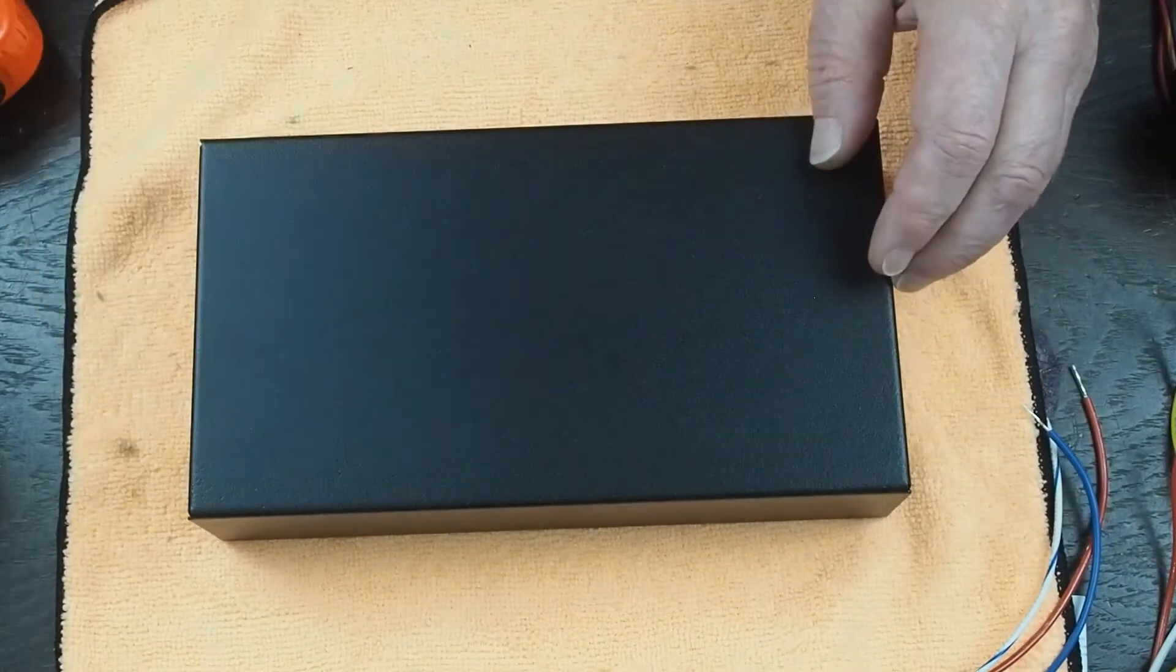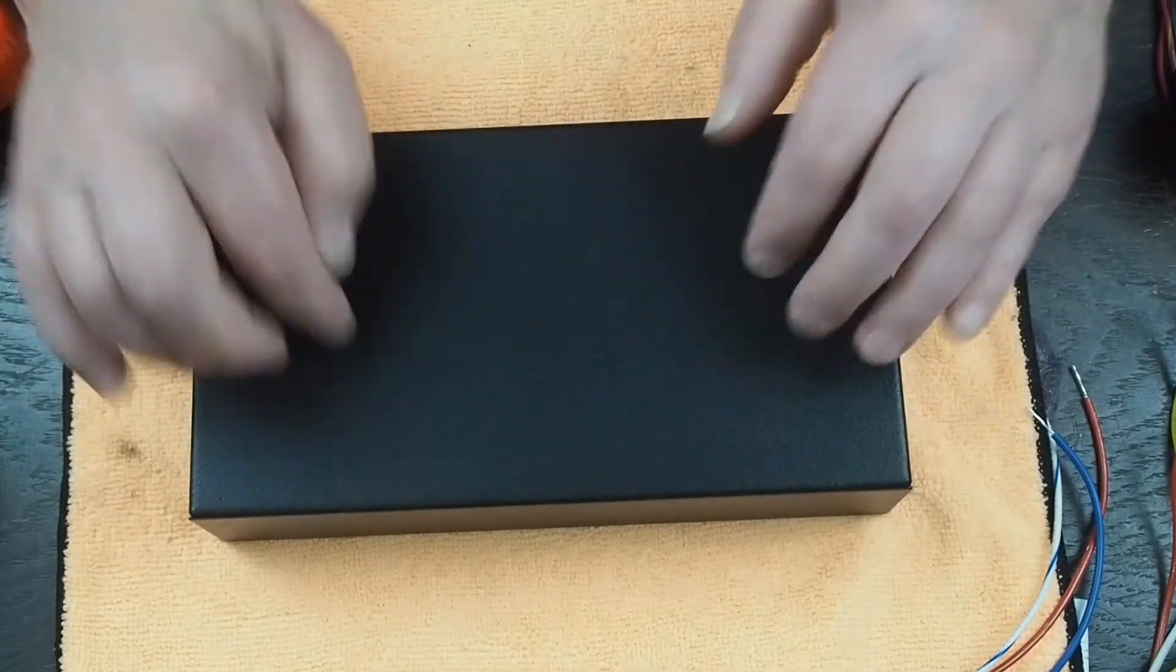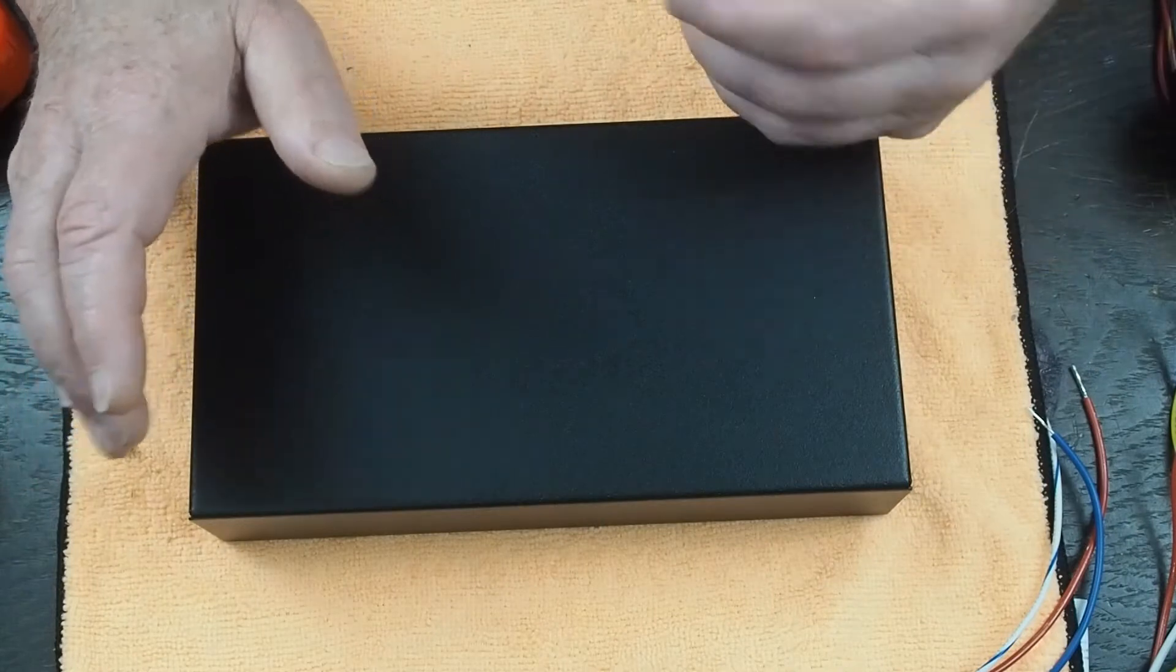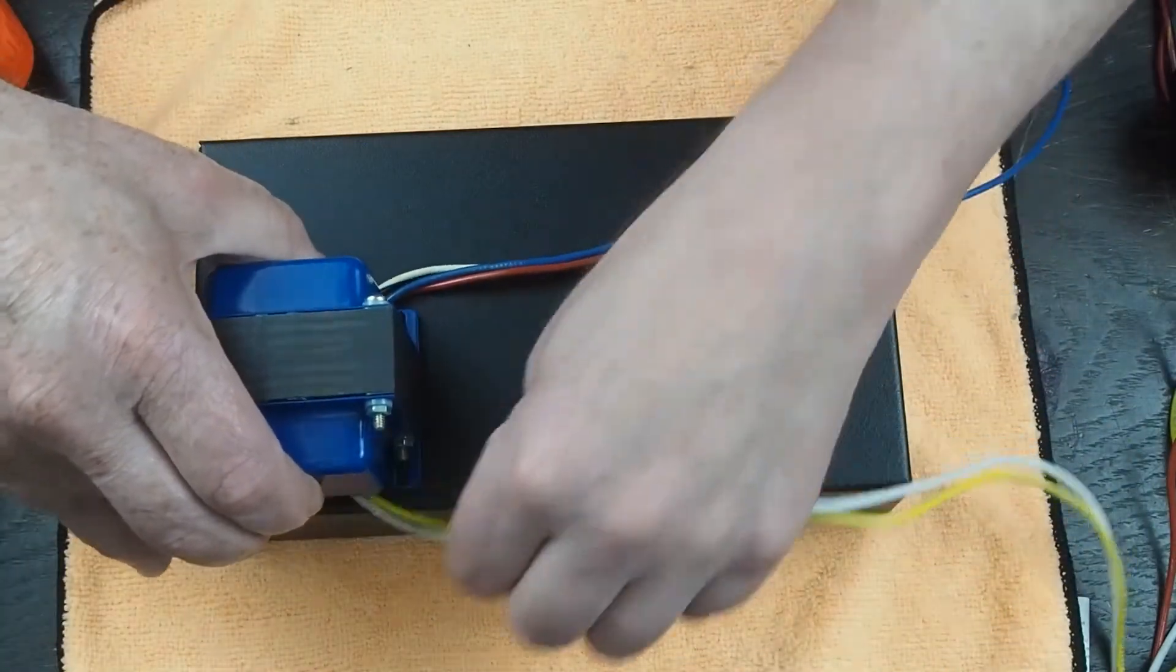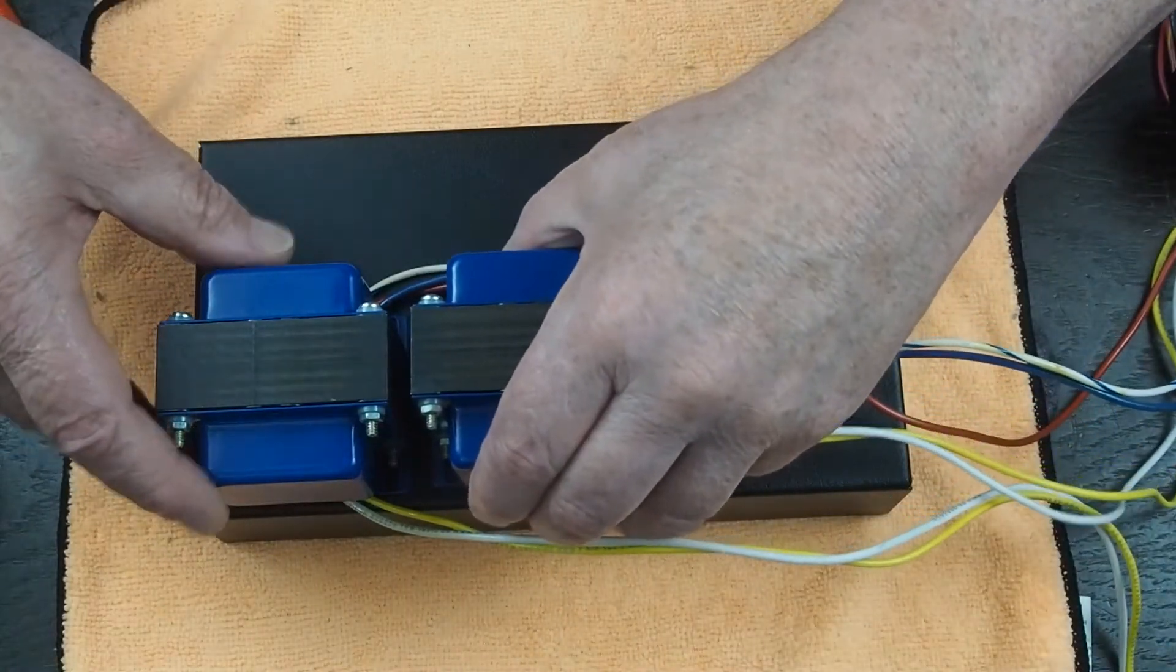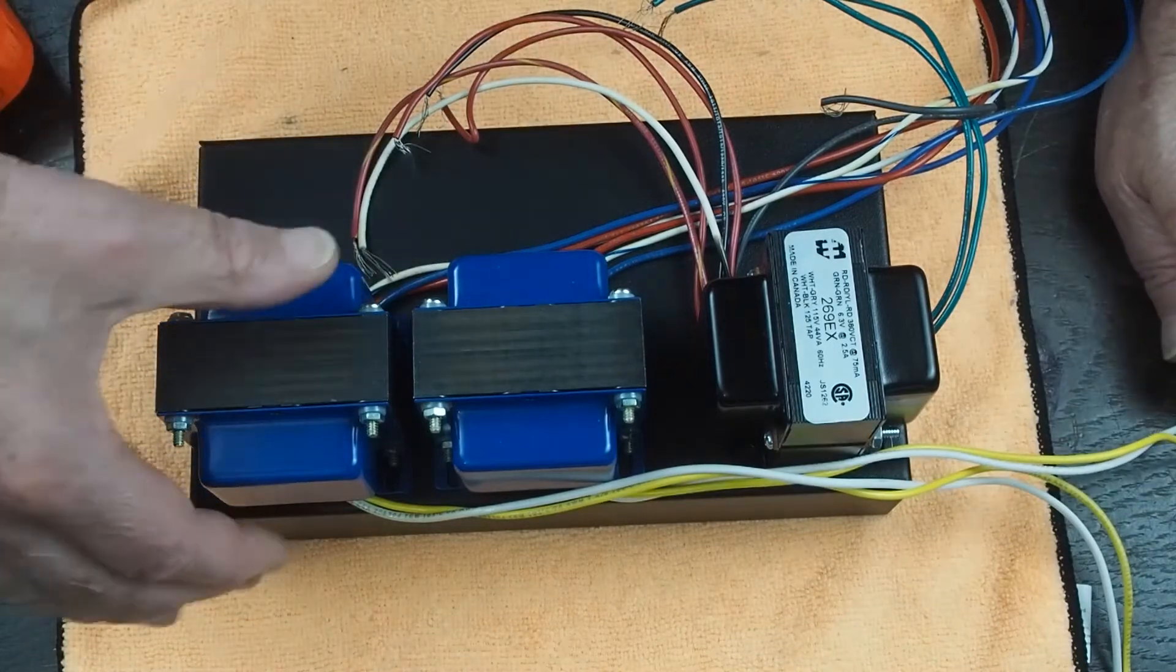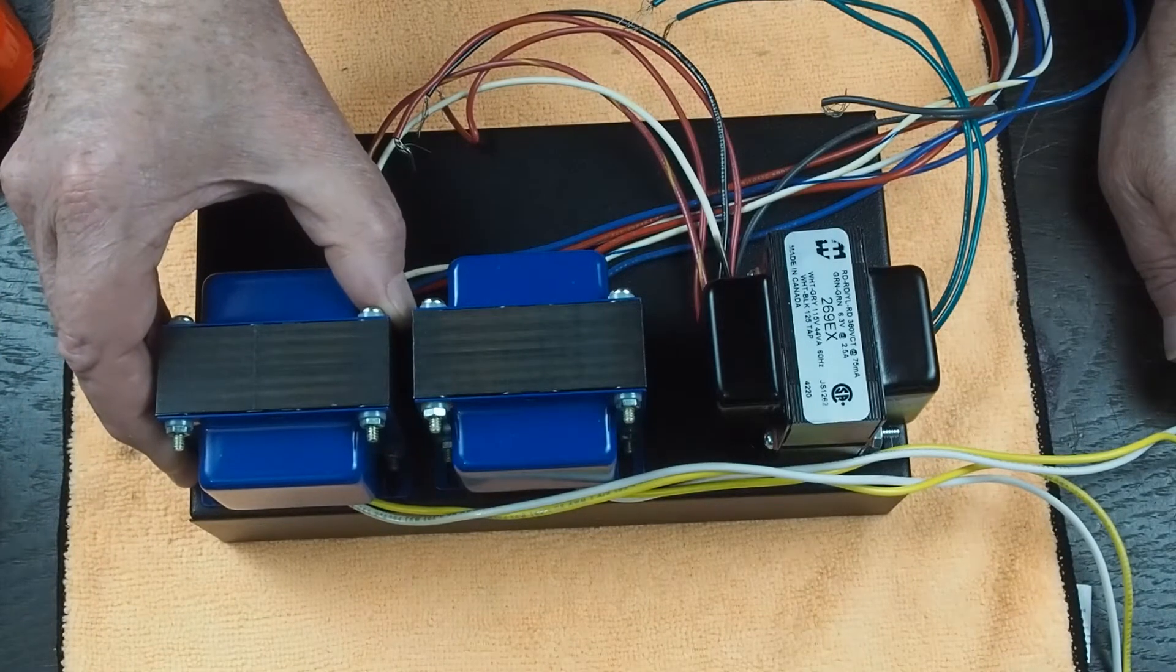The first thing we want to do is lay out our transformers, and we're going to drill the holes and mount them and run the wires through the chassis. The transformers are something that there's really not a lot of leeway on as far as where we put them, and so you have to kind of work around where you mount the transformers with the rest of the components. The output transformers are going to go like this, and then the power transformer is going to go over in this corner. I like to line up the back edge of the transformer with the back edge of the chassis.